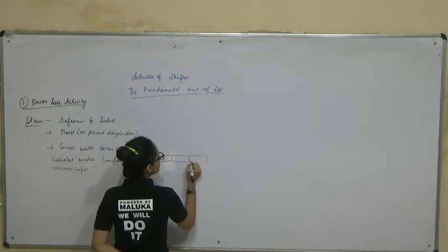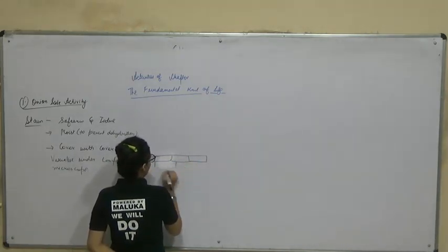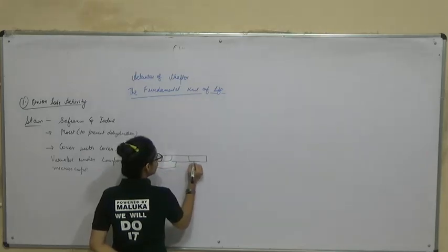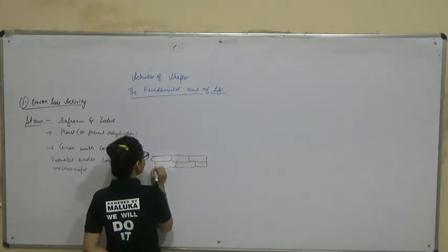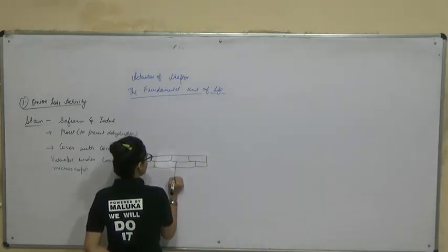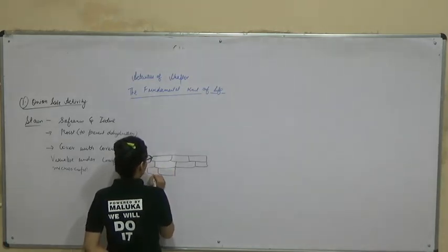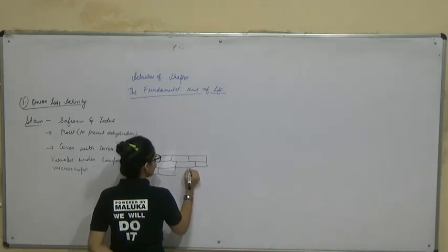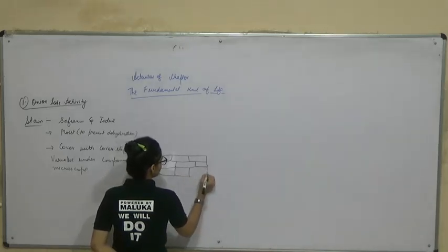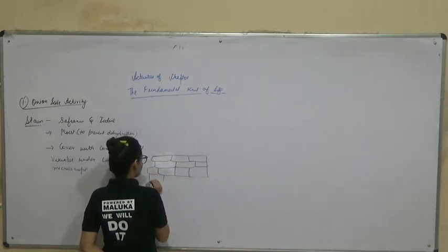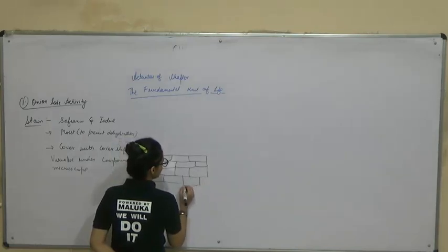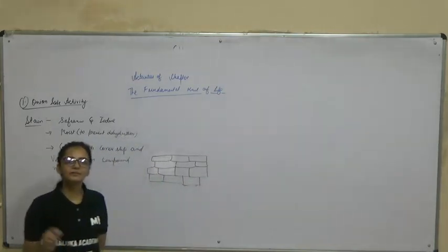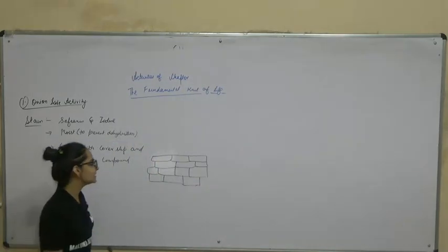After viewing under the compound microscope, you will see that the cell has a boundary, and there is a darkly stained central point. The structure actually looks identical to what is shown here. This is the onion peel experiment, which is Activity 5.1.